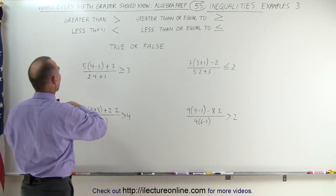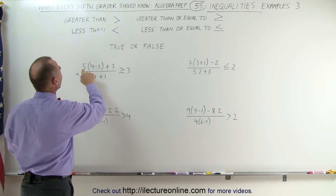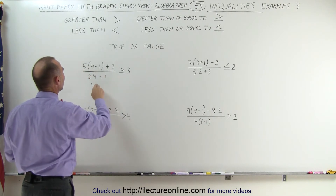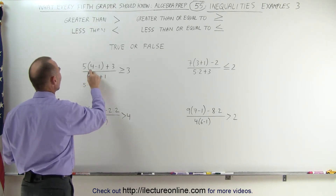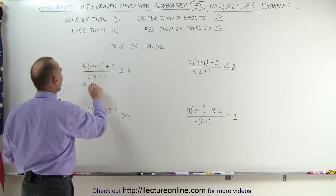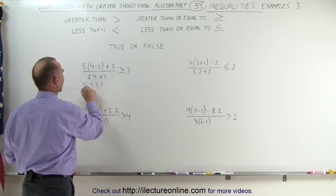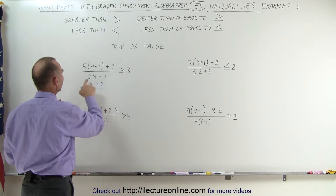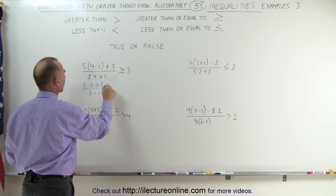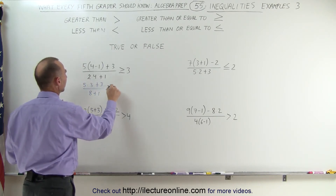Here we have the expression 5 times (4 minus 1), so this becomes 5 times 3, plus 3, divided by 2 times 4. I can go ahead and multiply that: 2 times 4 is 8, plus 1. Is that greater than or equal to 3?